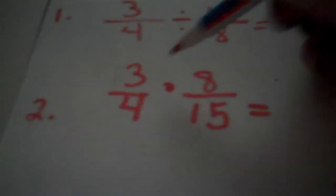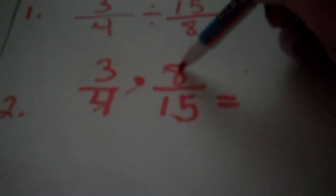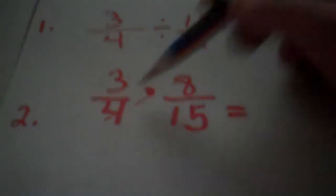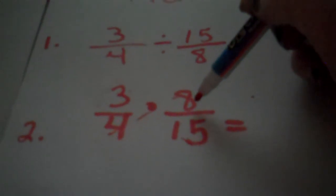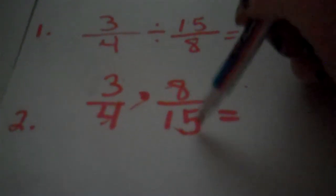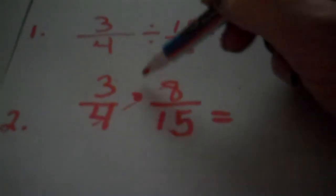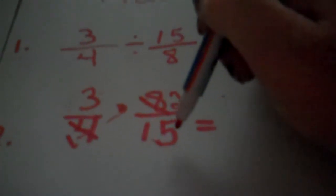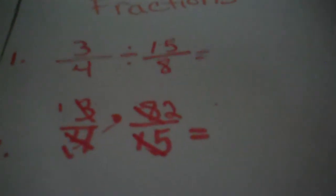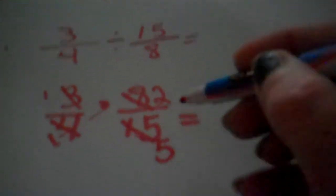So, the way that you can reduce is you can reduce in an X. So, you know, what goes into four and eight. And we all know that it's two. Or we can reduce up and down. And there's nothing we can reduce up and down, so we have to cross. And four goes into four one time. And four goes into eight two times. And three and fifteen also. Three can go into itself one time. And three can go into fifteen five times.